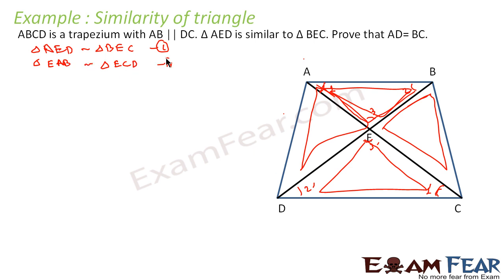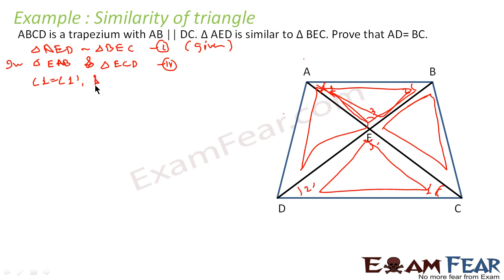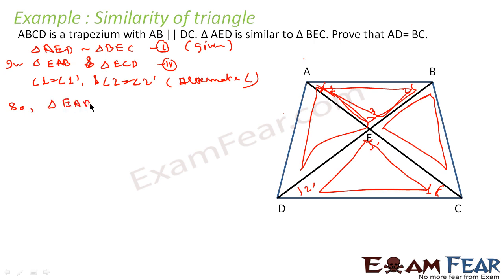If you want, we can write the steps. Let's write the steps since in the example we have to show them formally. We write: in triangle AED and triangle BEC, angle 1 equals angle 1', and angle 2 equals angle 2' by alternate angles. Therefore, triangle EAB is similar to triangle ECD.